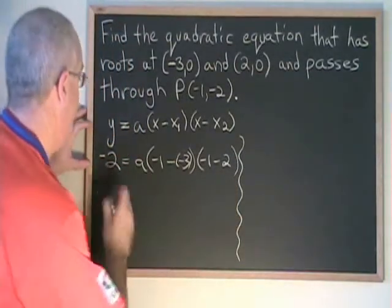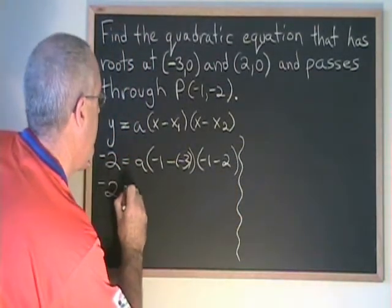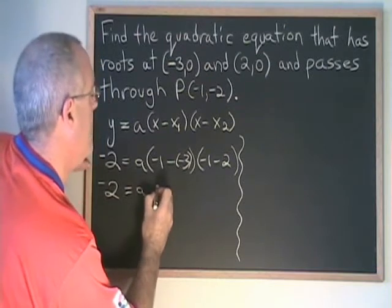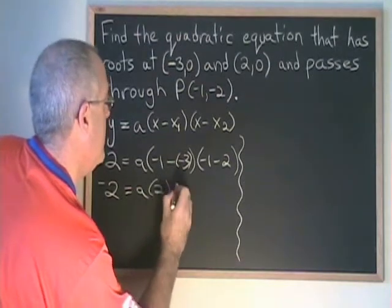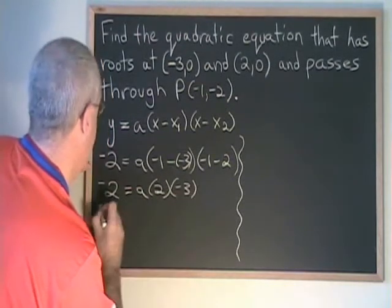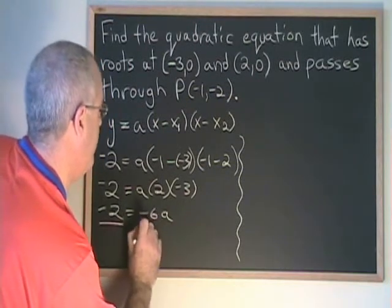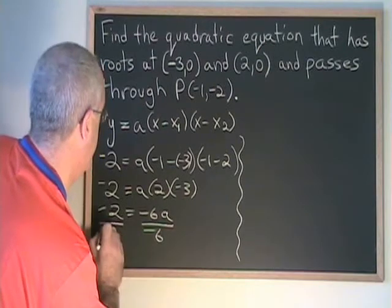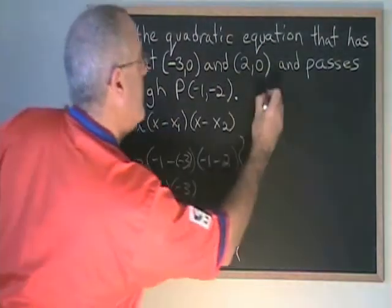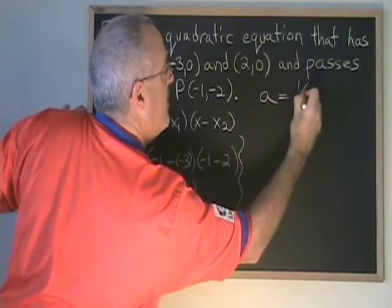Now we'll simplify. Negative 2 equals a times 2 times negative 3. Negative 2 equals negative 6a. And if we divide both sides by negative 6, we get a equals positive 1/3.